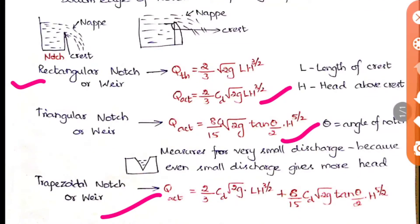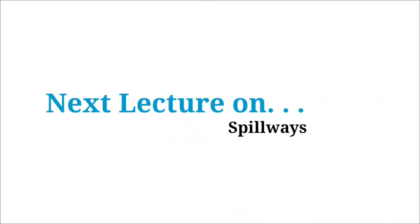In questions they will give you the H and L values alone — the length of the crest and the height above the crest — and from those you can find the actual Q value. The Cd value will also be provided. That is the simple type of question asked from this chapter. Thank you and keep watching for the next lecture on spillways.